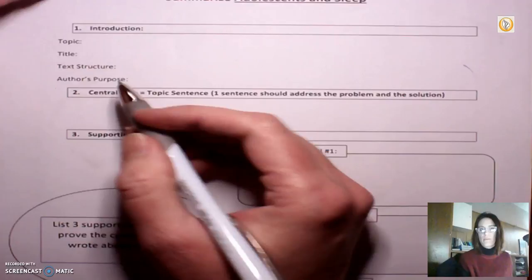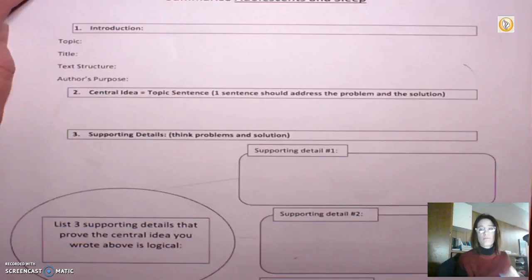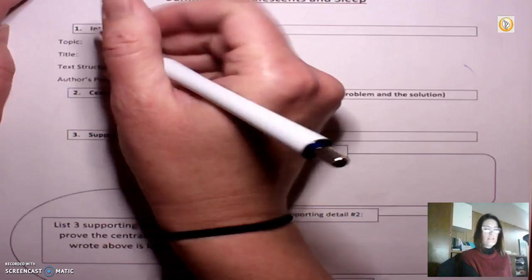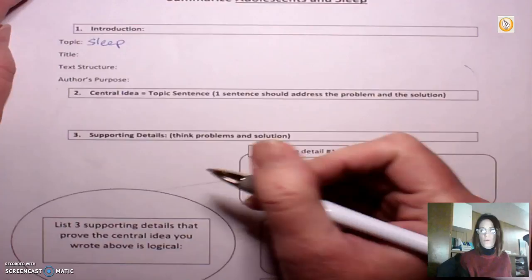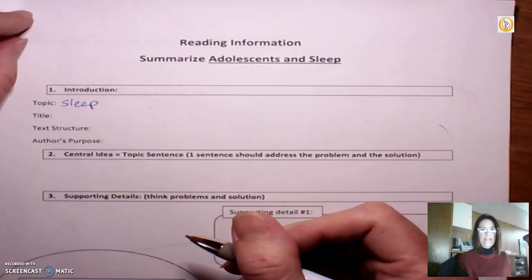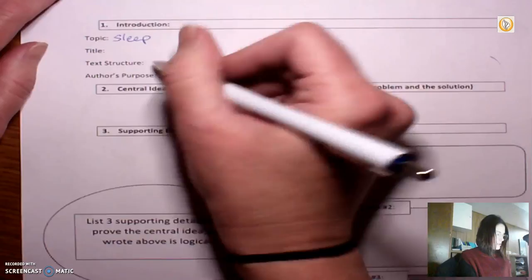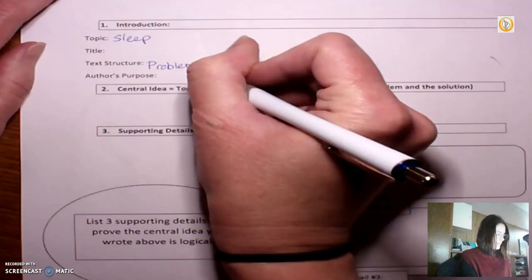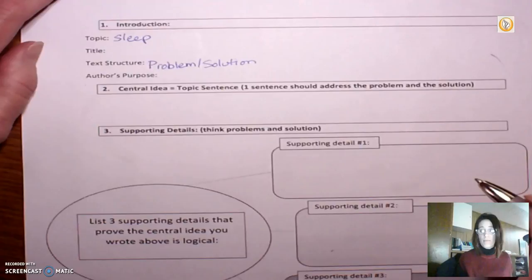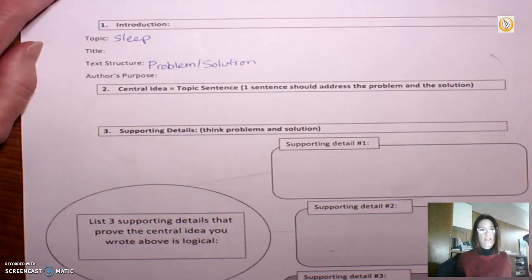So topic - when we think topic, we're thinking big, big ideas, umbrella ideas that can cover a lot of smaller ideas. So for the topic for this article, I'm going to just say, let's call it Sleep. Simple, it's a big idea, we can work with that. After that, we have the title, which of course is up at the top of the page. And now we have to think about text structure. The structure for this particular article is problem and solution. So a problem is stated and several ideas or perhaps one idea is floated as potential solutions. Pretty simple and straightforward this week. And finally, our author's purpose. Anytime we're talking about informational reading, the author is trying to inform.